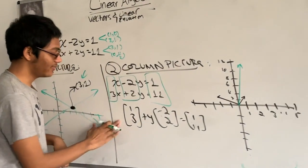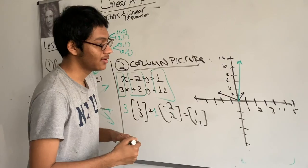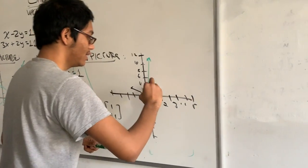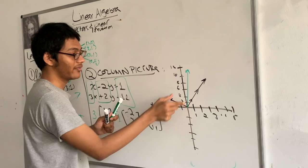So that means I need 3 of this vector, and I need 1 of this vector. So if I actually want to see that visually, that means I need to scale this vector by 3 and add 1 of this vector here.